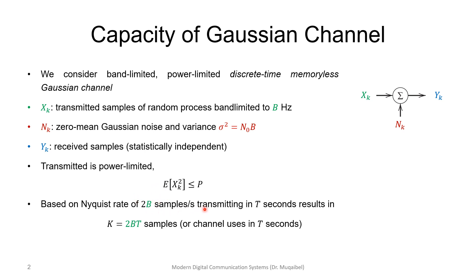We can relate this based on the Nyquist rate, where we sample at twice the highest frequency, giving 2B samples per transmission. So 2B samples are transmitted in T seconds. We have the relation K = 2BT, where K is the sampling rate times time, giving the number of samples or channel uses in T seconds.